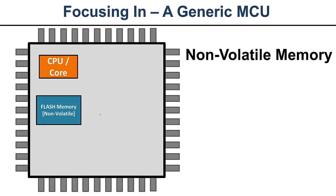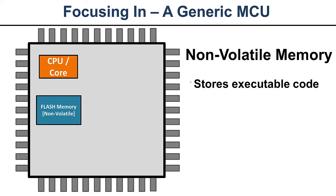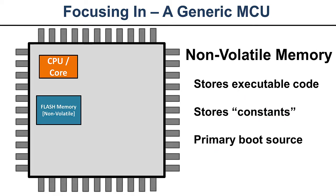The next piece we want to look at is non-volatile memory — memory that holds its state after power goes away. Non-volatile memory is what stores executable code. We can't have the primary memory source just disappear after power-up; it has to boot up and do something. So it stores constants, strings, and text — things that always remain the same — and it's your primary source of instructions after boot. Generally, when you boot up, the CPU or core will look to its flash memory for its boot-up source.